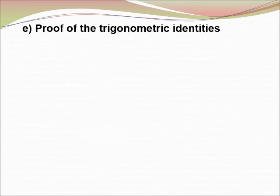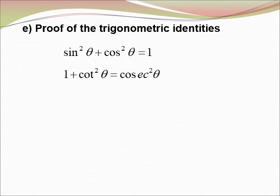Proof of the trigonometry identity. The identities are: sin²θ + cos²θ = 1, 1 + cot²θ = csc²θ, and 1 + tan²θ = sec²θ.